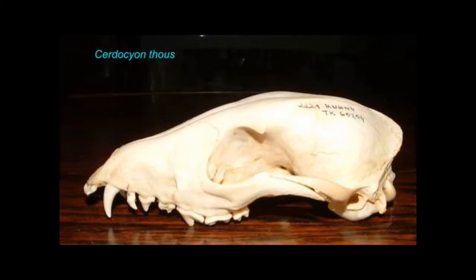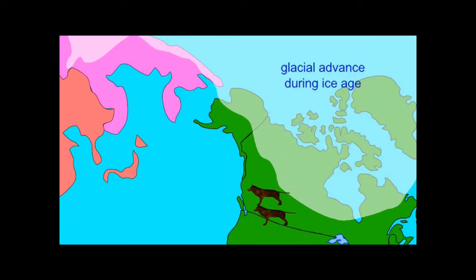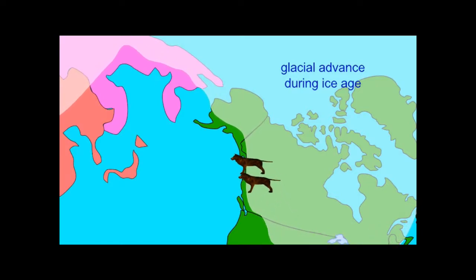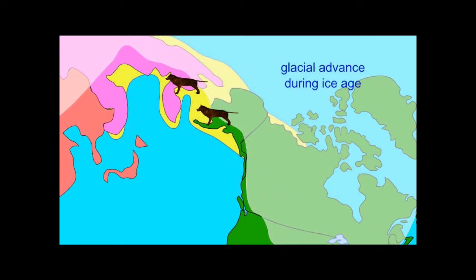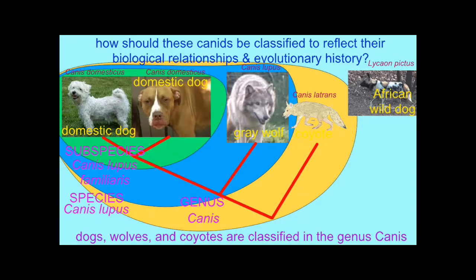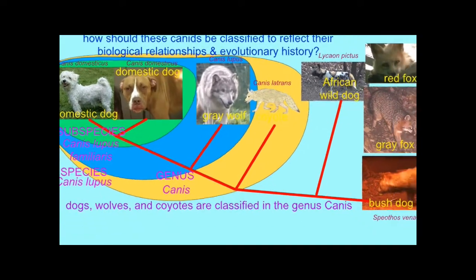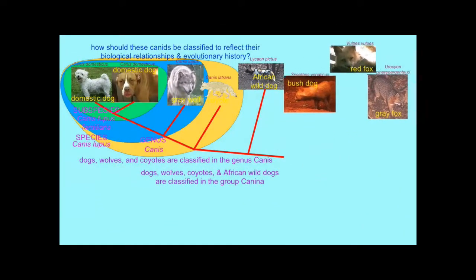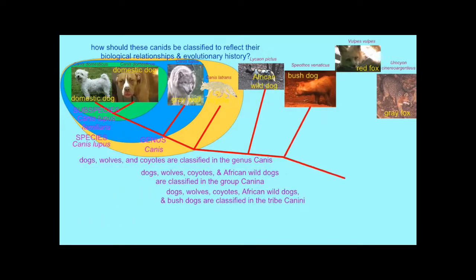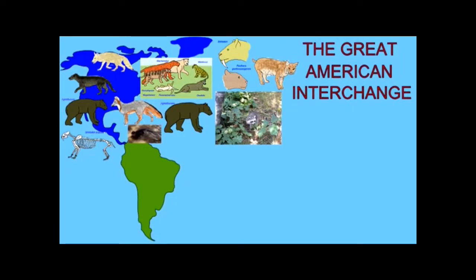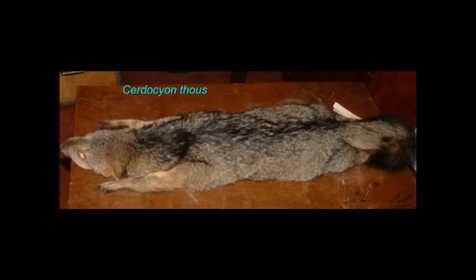Obviously some Canidae vary in chromosome number. Red foxes, for example, have 34 chromosomes compared to the 78 in dogs and wolves. Fennec foxes have 64 chromosomes, and raccoon dogs have 42. So while hybridization can show common ancestry in closely related species, as species become more distantly related, the accumulated genetic differences reach a point where hybridization is no longer possible.